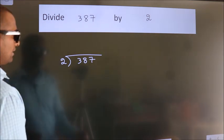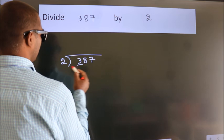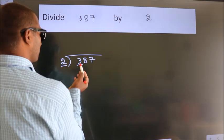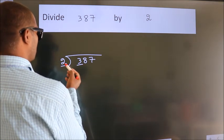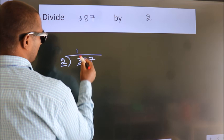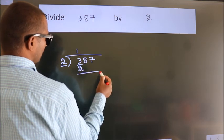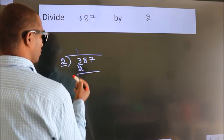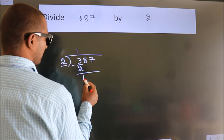Next, here we have 3, here 2. A number close to 3 in 2 table is 2 1s 2. Now, we should subtract. We get 1.